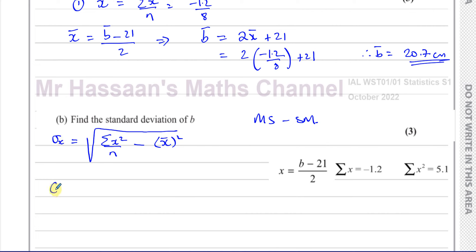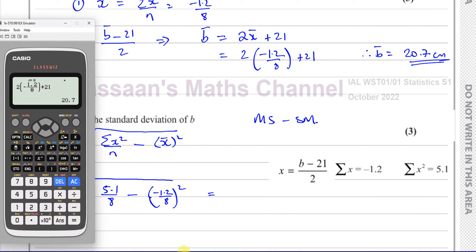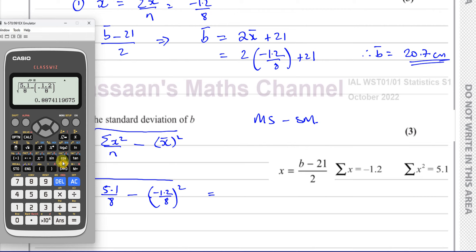The standard deviation of x equals the square root of: sum of x squared divided by n, minus the mean squared. That's the square root of (5.1 divided by 8) minus (minus 1.2 divided by 8) squared. Let's work that out.